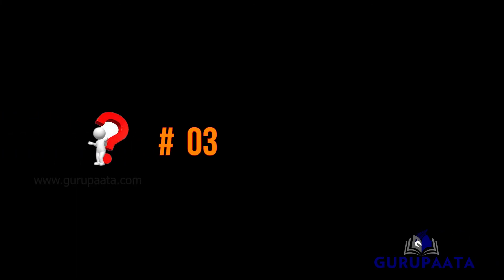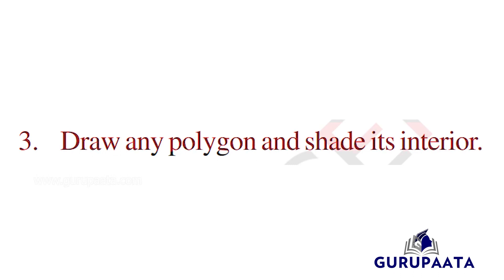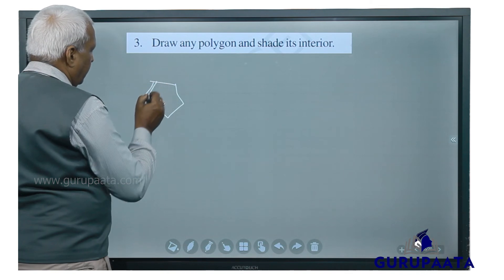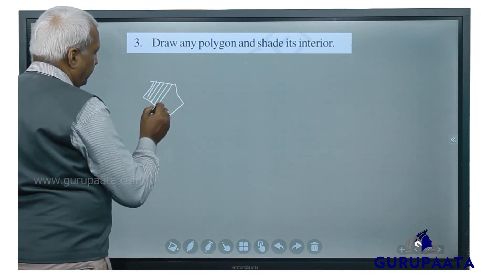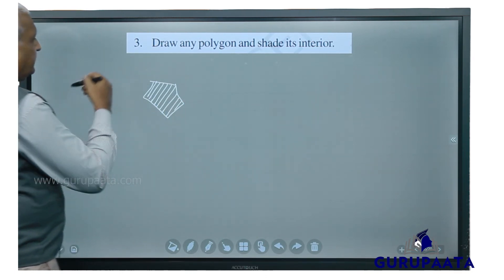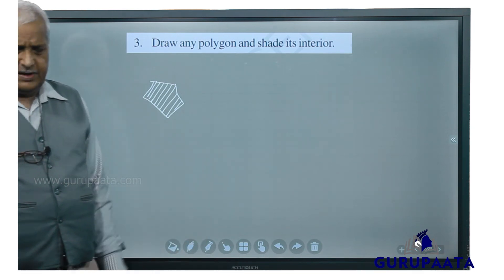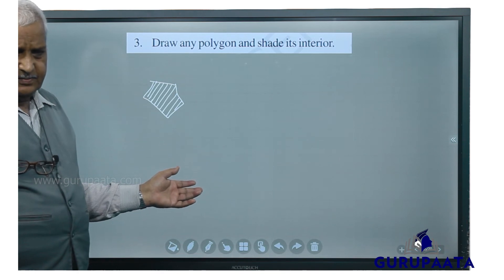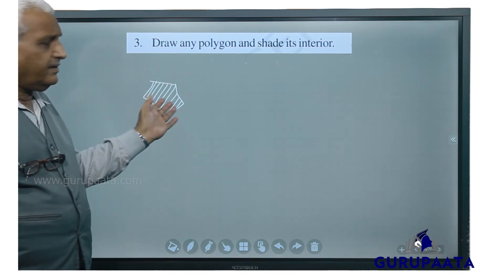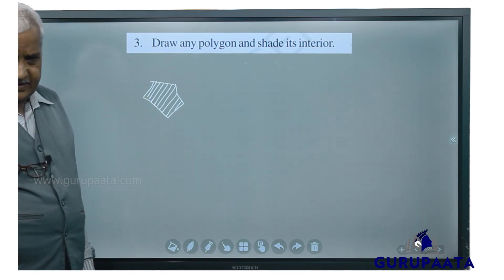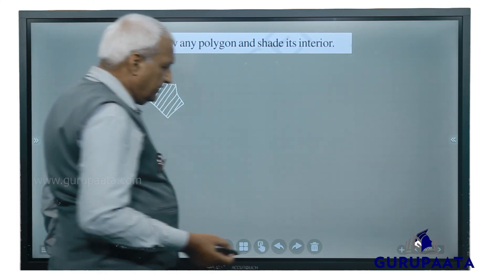We will go for question number 3: draw any polygon and shade its interior. We will draw one polygon with its interior to be shaded. You can draw any polygon with more than 3 sides — 5 sides, 6 sides, 7 sides — and shade it. This shading is also called hatching, which will be covered more in senior classes.